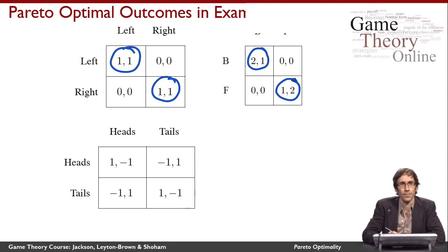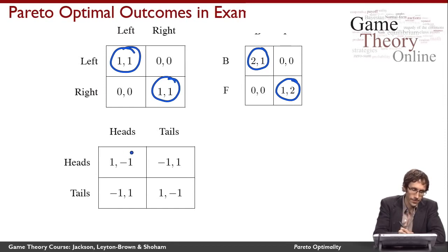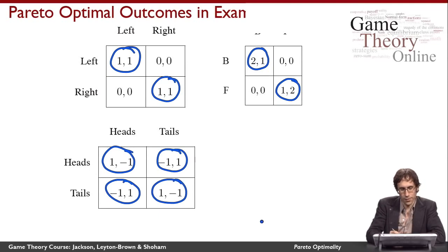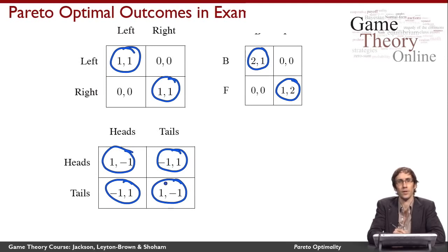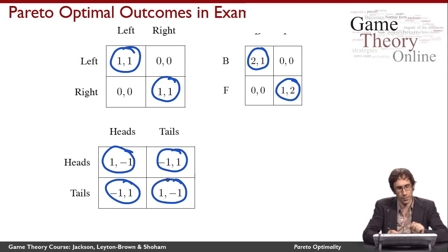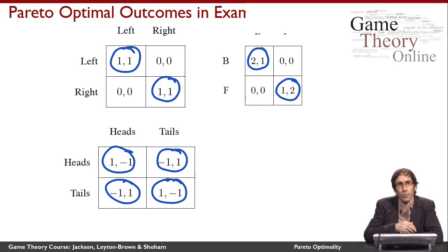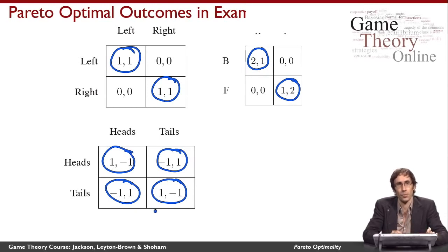In the matching pennies game, this one's a bit trickier. Every outcome is Pareto optimal, because there's no pair of outcomes where everybody likes the two outcomes equally well — there's always a strict trade-off because the game is zero-sum. And this is generally true of zero-sum games: every outcome in a zero-sum game is going to be Pareto optimal.